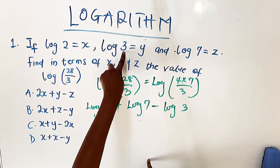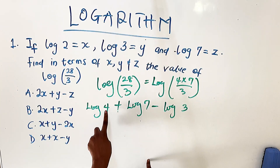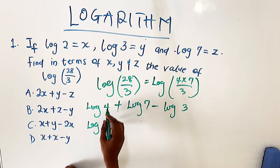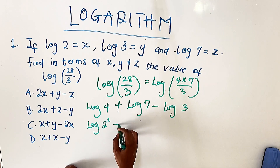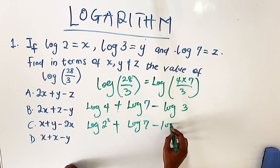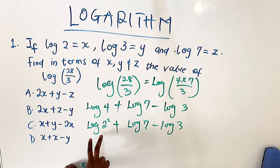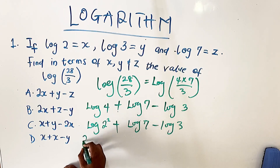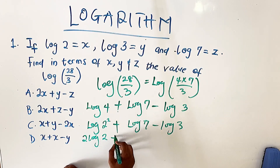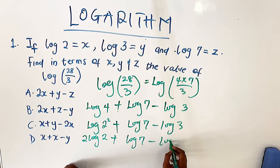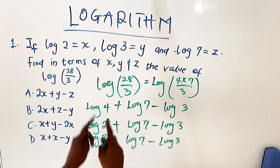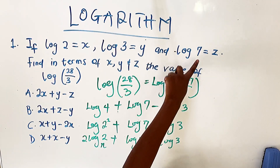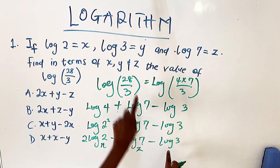We have values for log 2, log 3, and log 7, but here we have 4, 7, and 3. We can rewrite log 4 as log 2 squared. Then we bring the power down: log 2 squared becomes 2 log 2. So we have 2 log 2 + log 7 − log 3. Substituting: log 2 = x, log 7 = z, log 3 = y, giving us 2x + z − y.